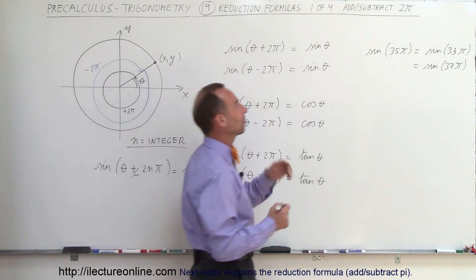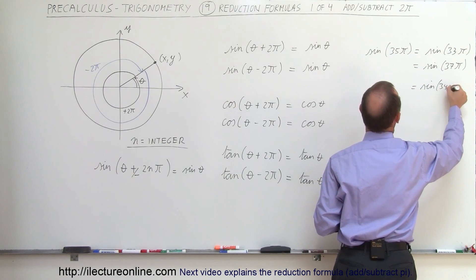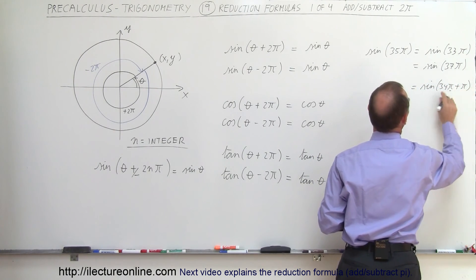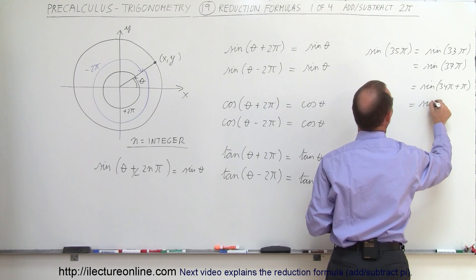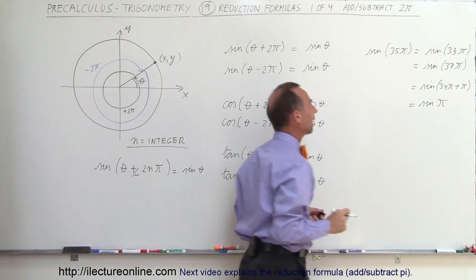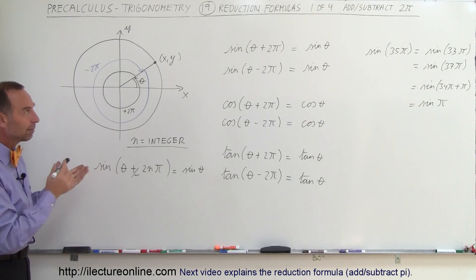In other words, if I have the sine of 35π, I can say this is equal to the sine of 34π plus π. And since I can take any even number of π away, that's equal to the sine of π. That's how we reduce more complicated trigonometric functions into much simpler format by using this reduction formula.